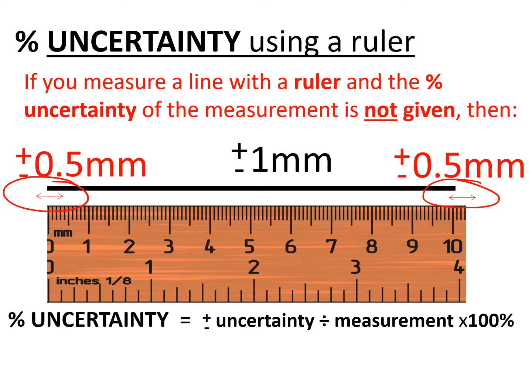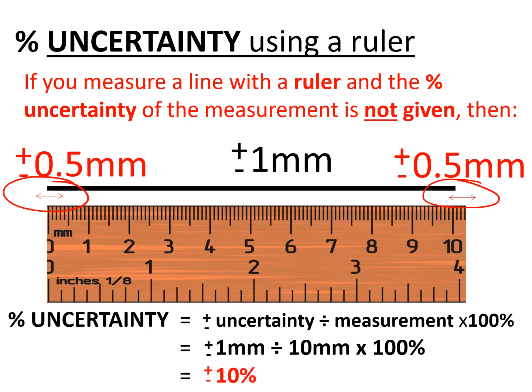To convert this into a percentage uncertainty, it's simply the uncertainty divided by the actual measurement times 100%. So that's plus or minus 1 millimetre divided by 10 millimetres times 100%, giving us plus or minus 10% uncertainty. So the measurement is 10 millimetres and the percentage uncertainty is plus or minus 10%.